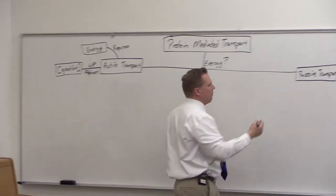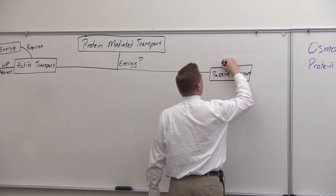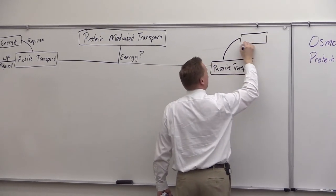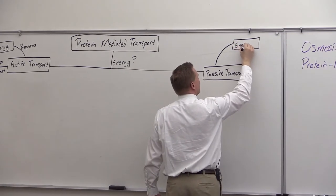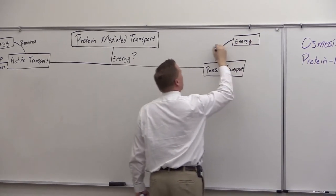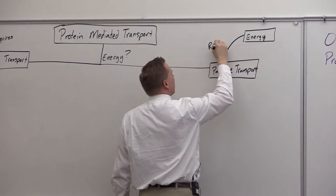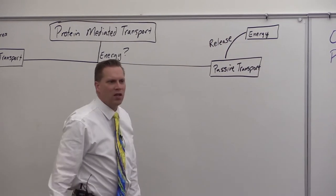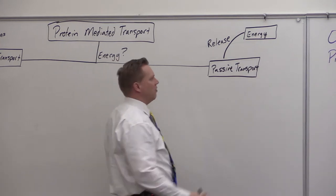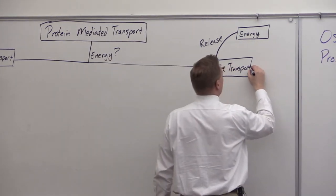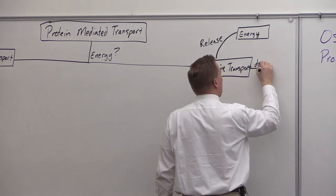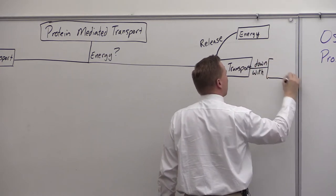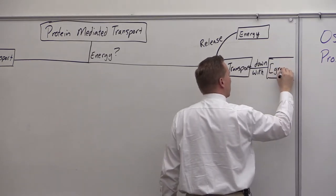Passive transport is kind of the opposite. Instead of requiring energy, passive transport is actually a release of energy — it would have a negative delta G — and we are moving down or with our concentration gradient.